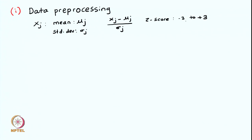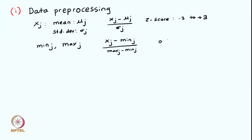This is one of the possible ways of normalizing the data. Another way is to find the minimum value, let us call it min_j, and the maximum value, max_j, of the feature. What we do is subtract the minimum value from the current value and divide it by the range of min and max. This also helps us in getting all the features in the range 0 to 1. These two are the techniques used quite often in normalization.